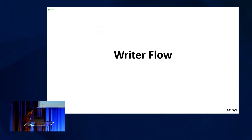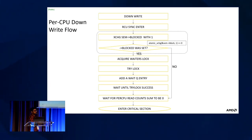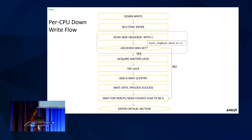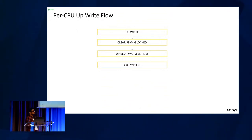In the per-CPU RWSM writer flow, writers first call rcu_sync_enter to mark the sync state machine as non-idle. This call can only return after an RCU grace period, at which point all CPUs and all readers have observed the non-idle state. Only one writer thread then waits for the readers; others add themselves to the wait queue. The first writer sets the blocked bit and waits for all per-CPU read counts to go to zero before entering the critical section. In the up path, the blocked bit is cleared, waiting contenders are woken up, and the state machine is exited.